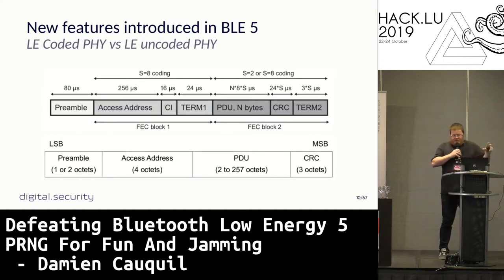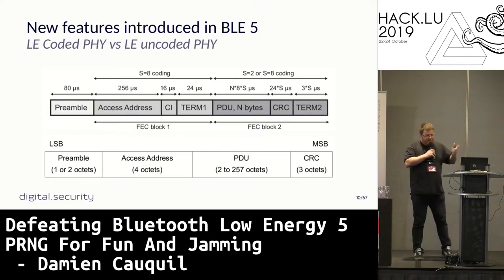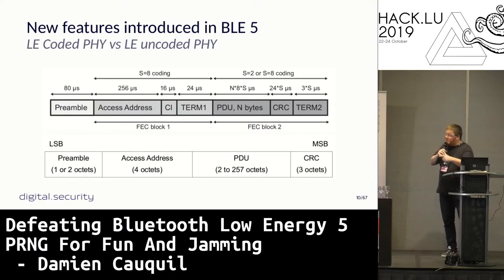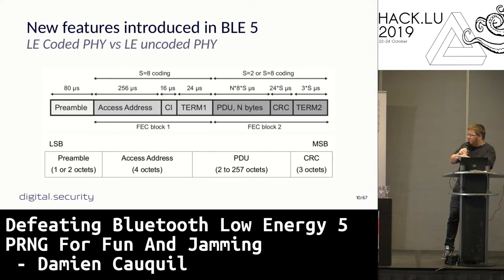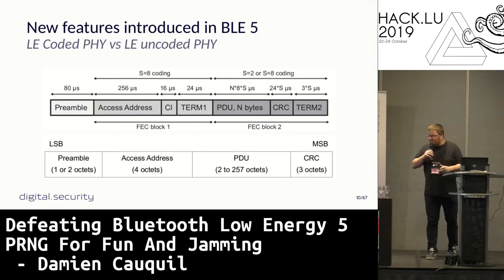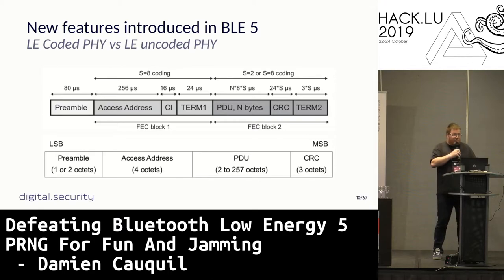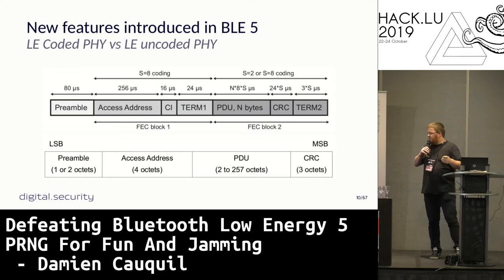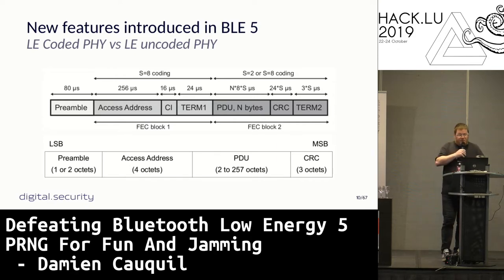If you look at the datagram — what packets look like with these different PHYs — the uncoded PHY is very complex to sniff or work with, it takes more time to develop for. But the legacy PHY has quite identical parameters. The first key parameter is the access address: a 4-byte, 32-bit value that identifies a link between two devices. This value is important — when you create a connection between two devices, it is identified by this access address.